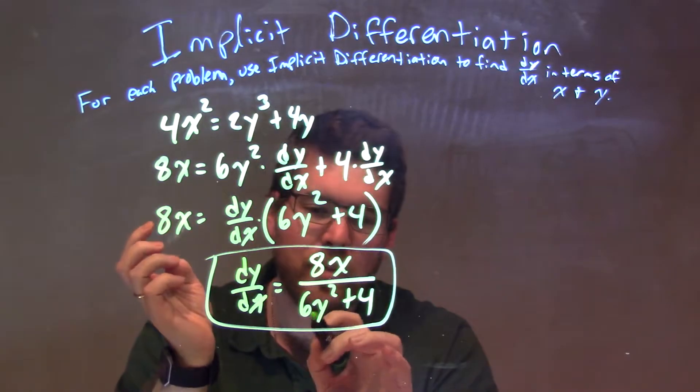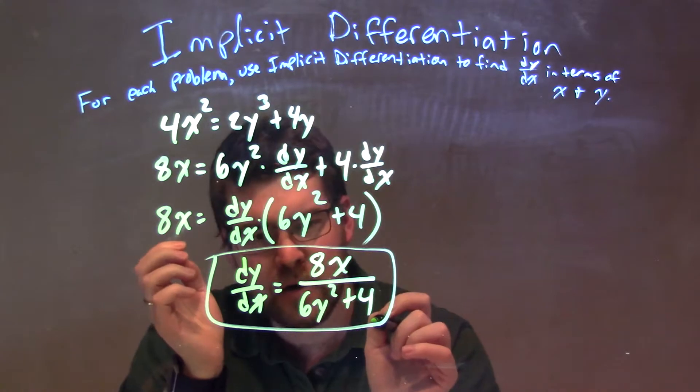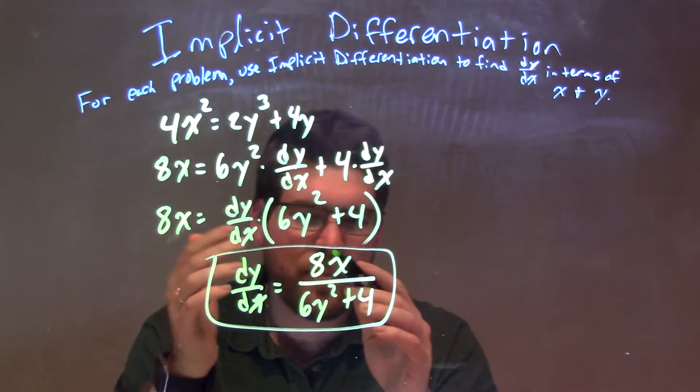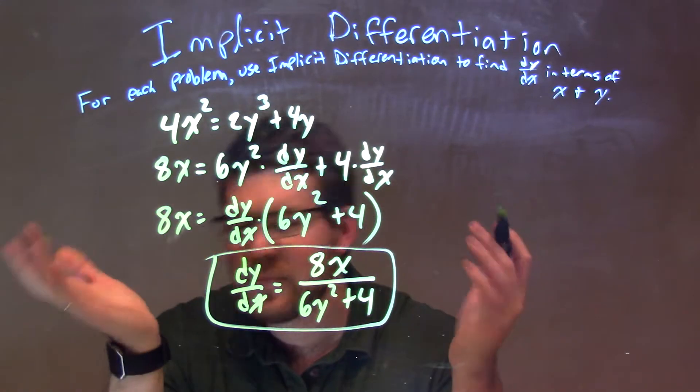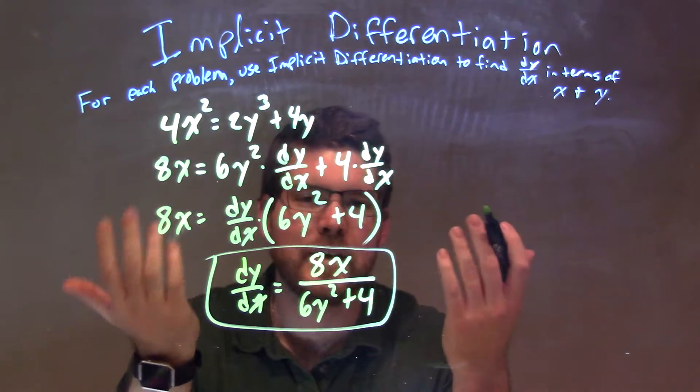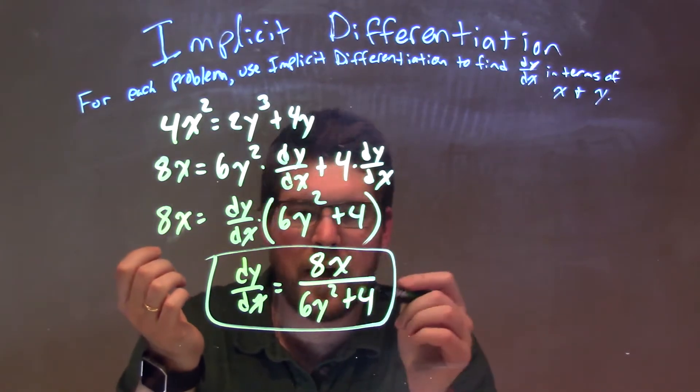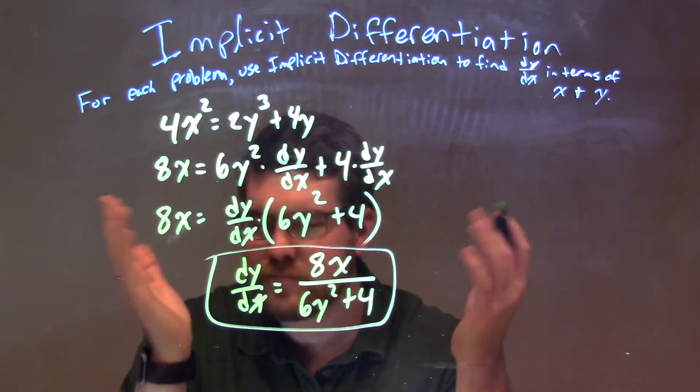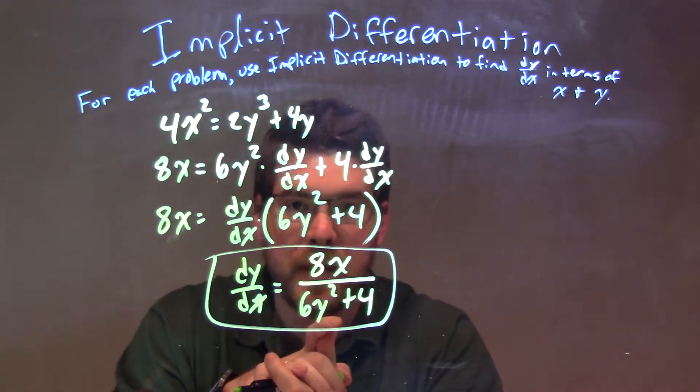Now, if you really wanted to, you could pull a 2 out of both parts of the denominator there, and then eliminate part of it, simplify a little bit. You'd have 4x over 3y squared plus 2. But either way, we have our final answer.